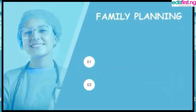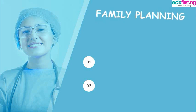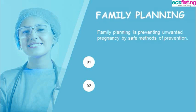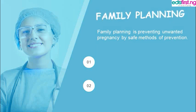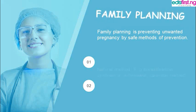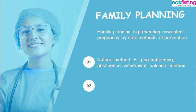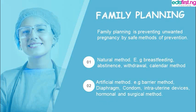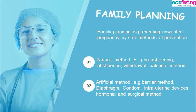Finally, we look at family planning. Family planning is one major aspect of reproductive health and is defined as preventing unwanted pregnancy by safe methods of prevention. This method is actually used by married couples. There are several ways in which family planning is executed. Two major ways are the natural method and the artificial method. Under the natural method, we have abstinence, withdrawal, and the calendar method. While the artificial method covers the barrier method, diaphragm method, the condom method, intrauterine devices, hormonal, and surgical methods.